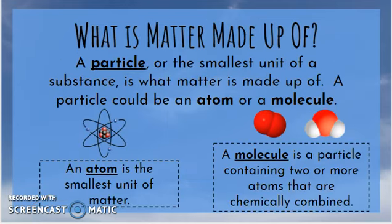So what makes up matter? Matter is made of small particles — they're the smallest unit of a substance that makes up matter. A particle is what makes up matter, and particles come in a couple of different forms. We'll focus on an atom and a molecule. An atom is the smallest unit of matter — the smallest thing that still has all the characteristics or properties of any particular substance. A molecule is a particle that has two or more atoms chemically combined.